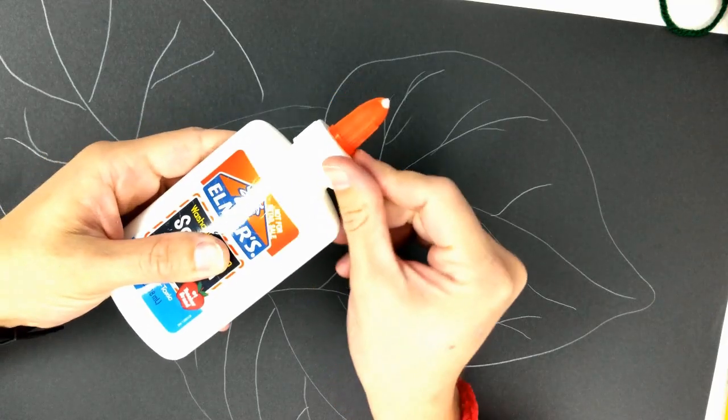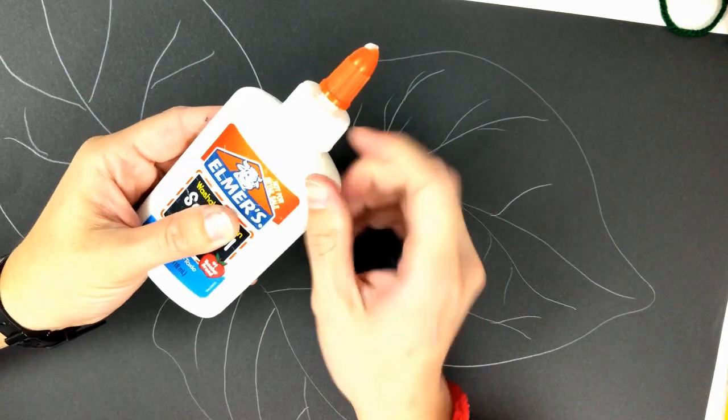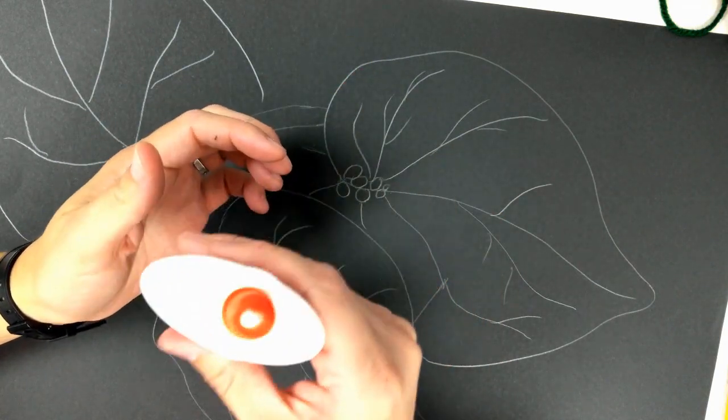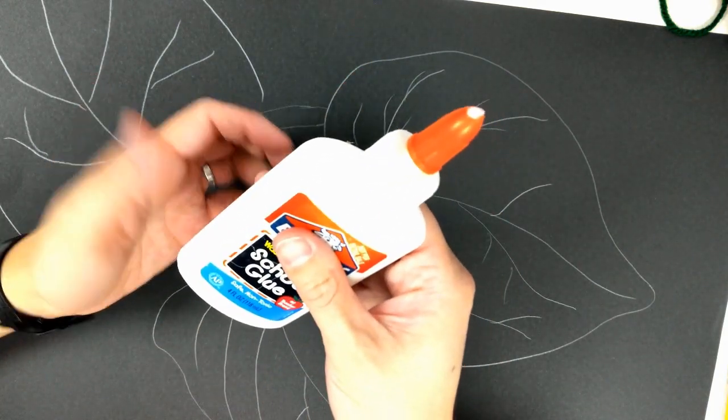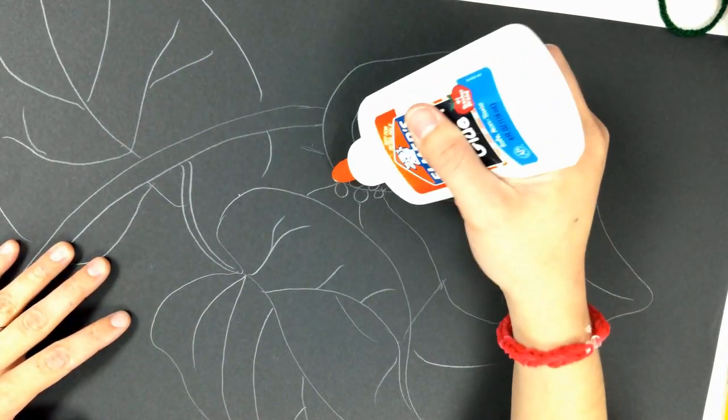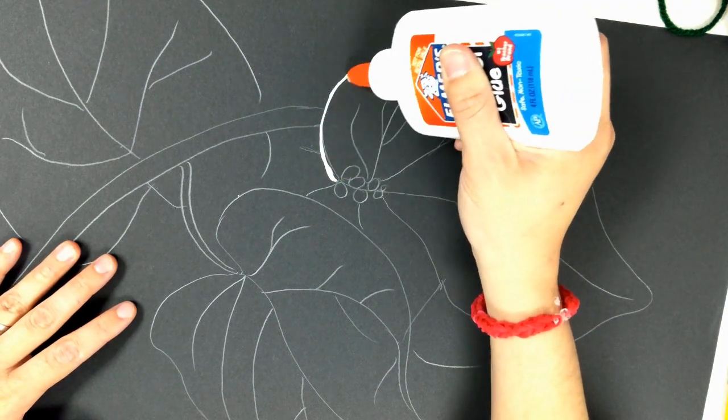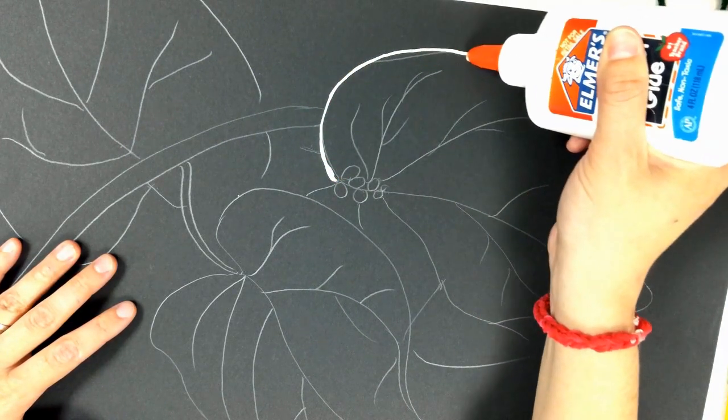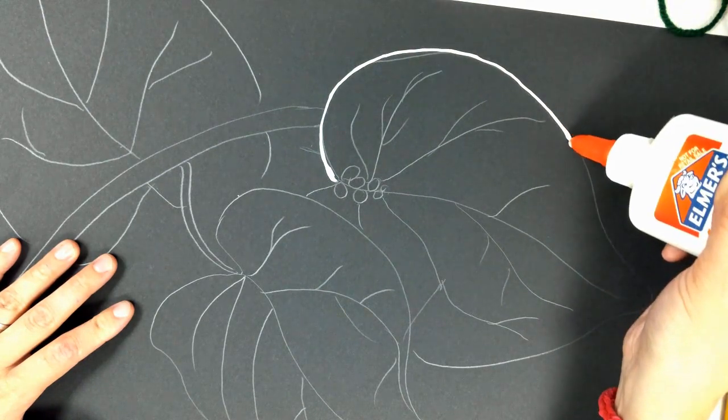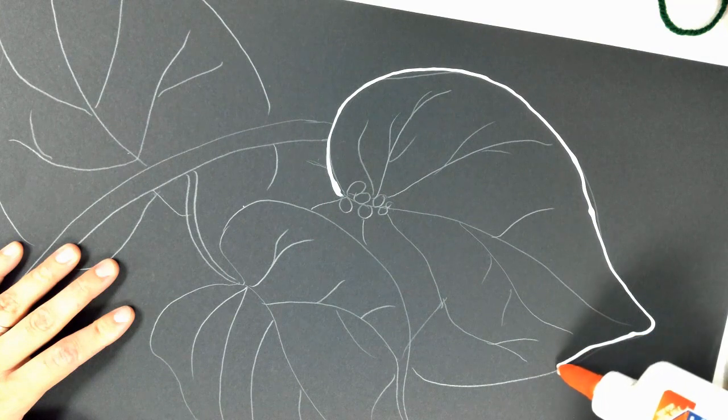When you're using the glue bottle open it up first then kind of squeeze it lightly to see if it's breathing. If it's breathing then you're ready to go, you have no clogs, and you're going to press slightly so it's a light pressure, not gobs of glue. I sort of use it like a pencil and I'm drawing with it and dragging that bead of glue over all of my pencil lines.